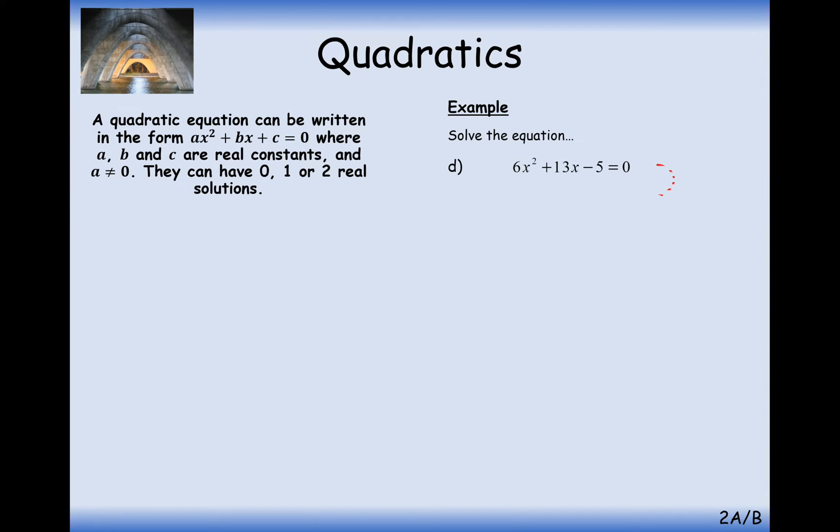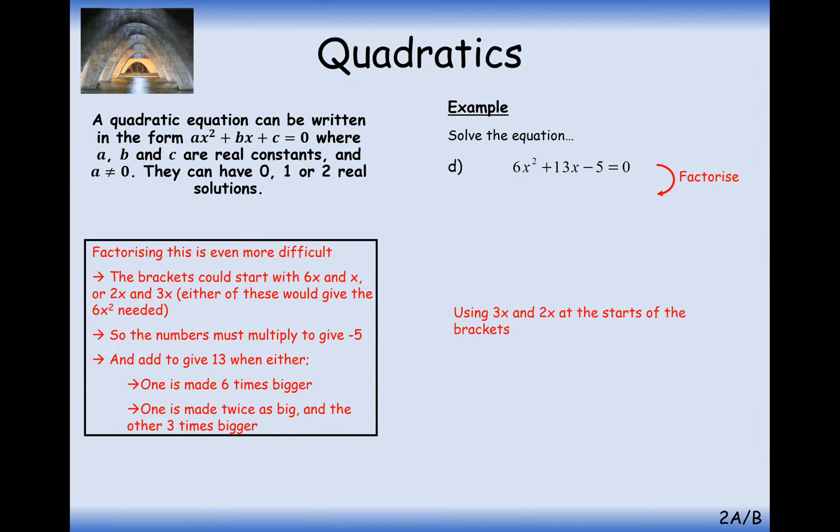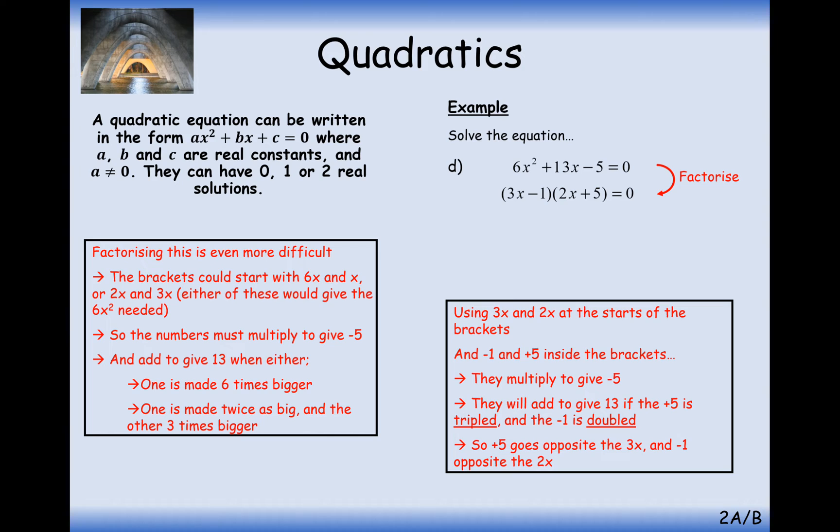Slightly harder now, we've got 6x² here now. So either when we factorize we're going to have a 3x and a 2x in our bracket, or we're going to have a 6x and an x. So it's a lot of trial and error. So let's try a 3x and a 2x inside here. And we'll try 3x minus 1 and 2x plus 5. Notice here how when we expand, we're going to get minus 2x and 15, which is going to make us a minus 13x. And the minus 1 times the 5 is minus 5. So in this case here, either 3x minus 1 equals 0, in which case x is a third, or 2x plus 5 equals 0, in which case x is minus 5 over 2.